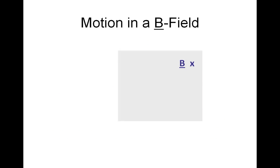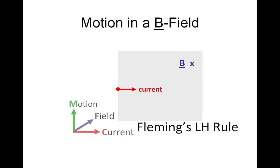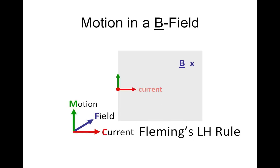Now if we look at the motion in a B field, in a magnetic field, here we have a B field into the paper, into the screen. Again we have a positively charged particle moving to the right, so our current is to the right. Using Fleming's left hand rule, this gives us direction of force upwards.